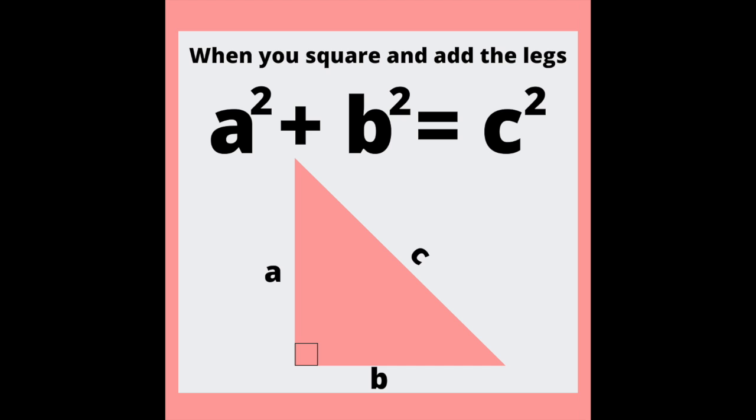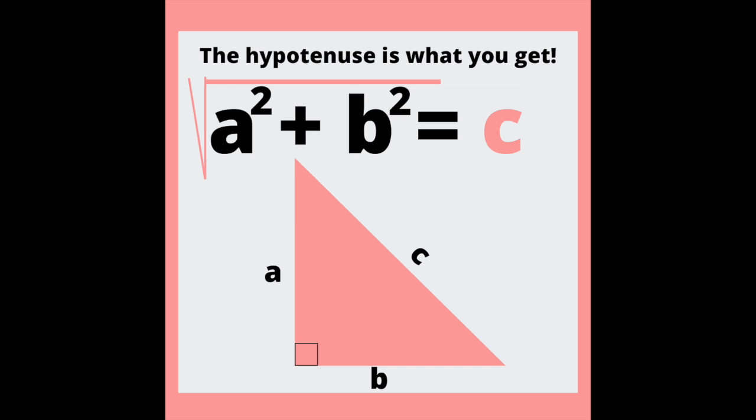When you square and add the legs and then you square root it all, the hypotenuse is what you get.